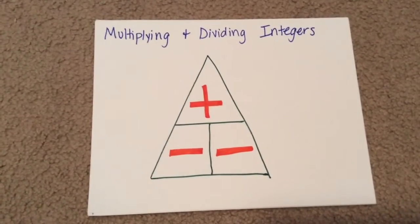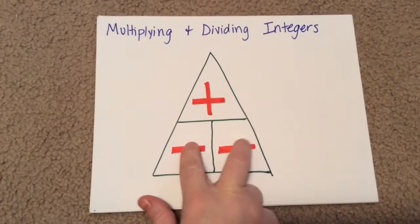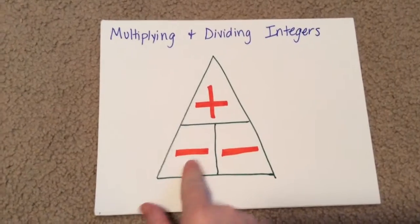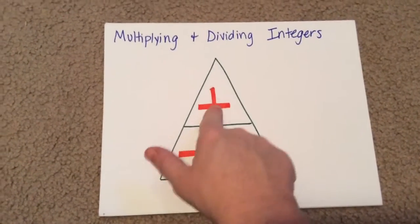So if we are multiplying a negative times a negative, we cover those up, and my answer is positive. If I'm dividing a negative by a negative, I cover these two up, and my answer is positive.